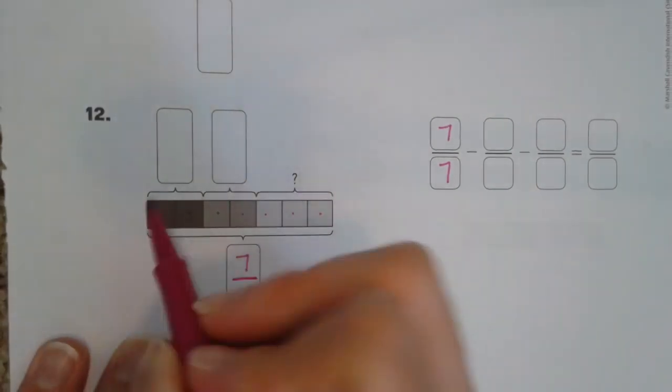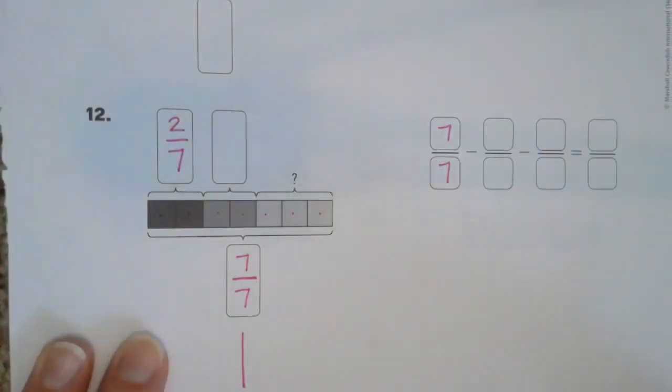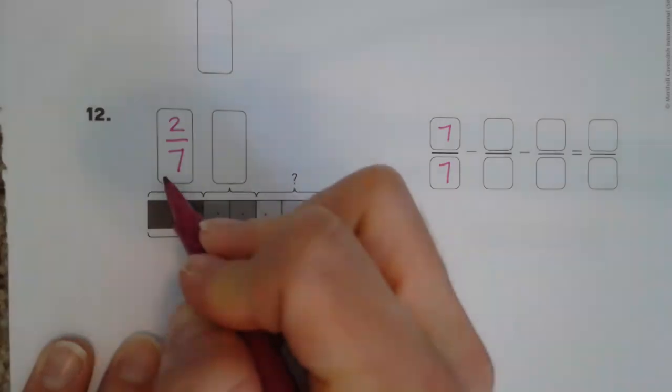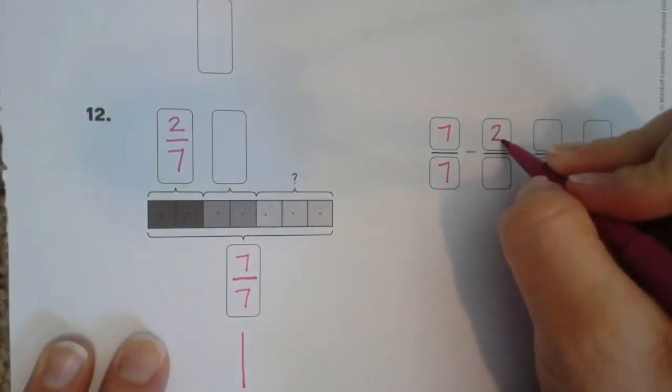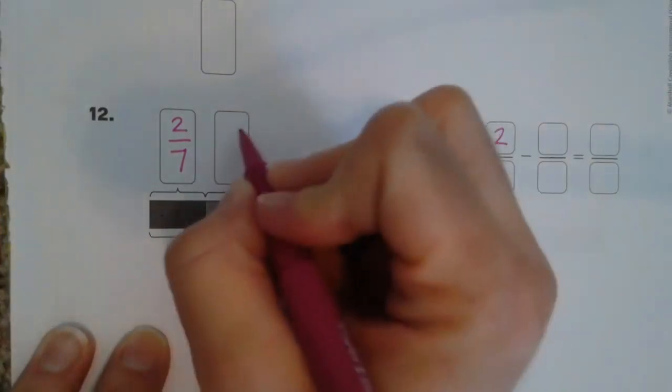Right here we have 2 sevenths. So we're going to take 2 sevenths away. So we start with 7 sevenths, we're going to take 2 sevenths away. And then, we're going to take these 2 sevenths away.